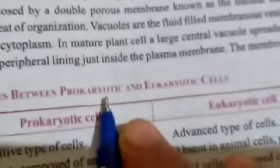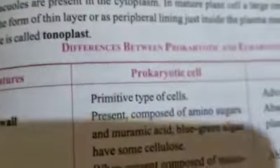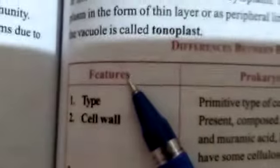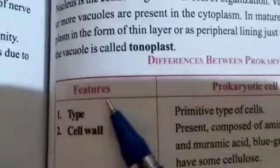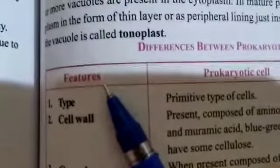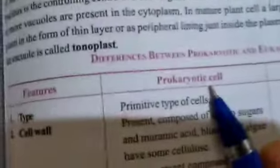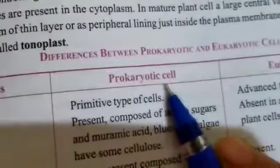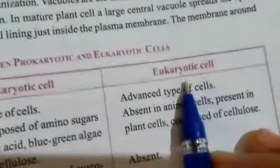Dear students, now we will see the difference between eukaryotic and prokaryotic cells. You need to make a table with three columns and write the differences. In the first column write 'Features' or 'Characters', in the second column write 'Prokaryotic Cell', and in the next column write 'Eukaryotic Cell'.